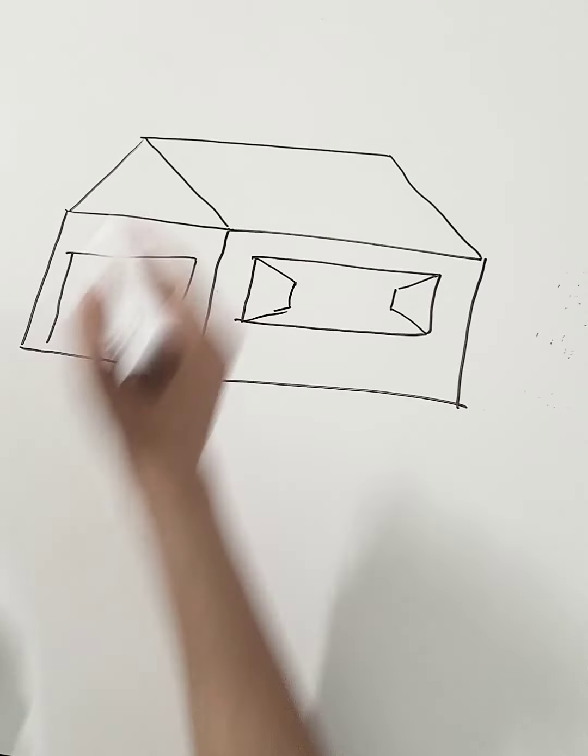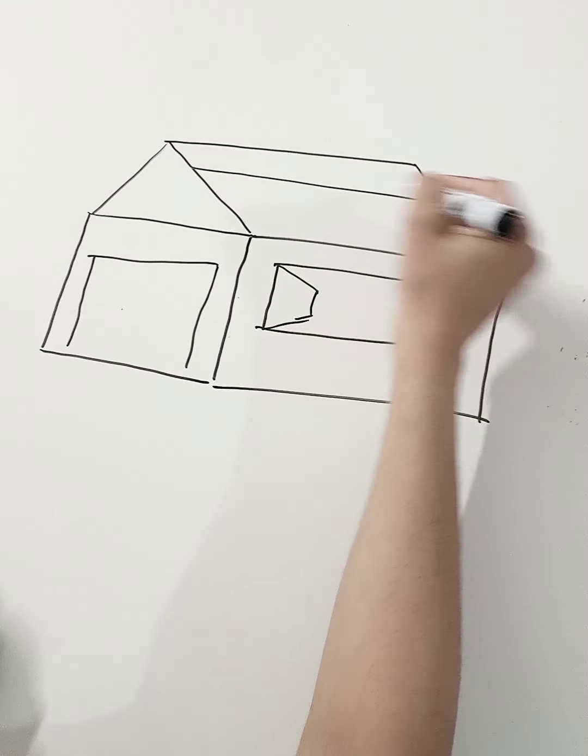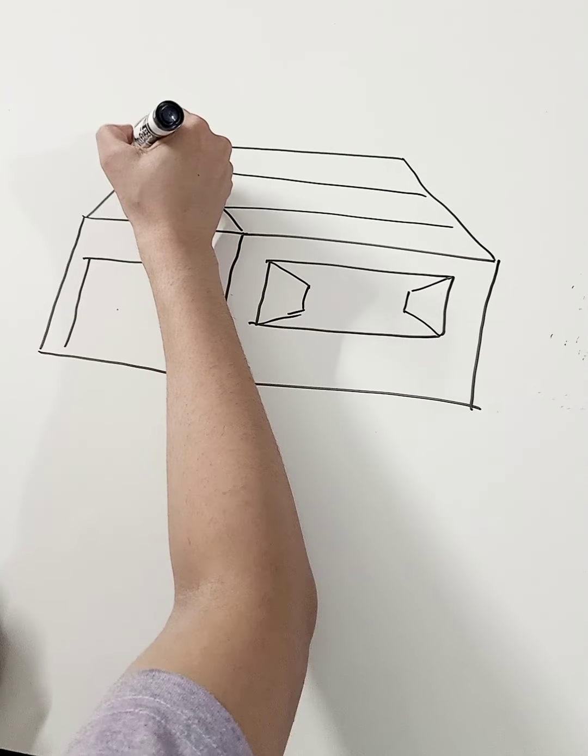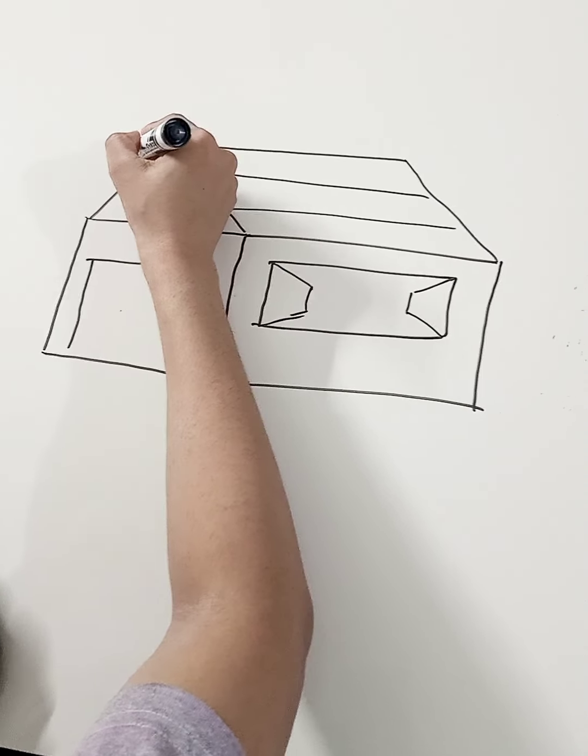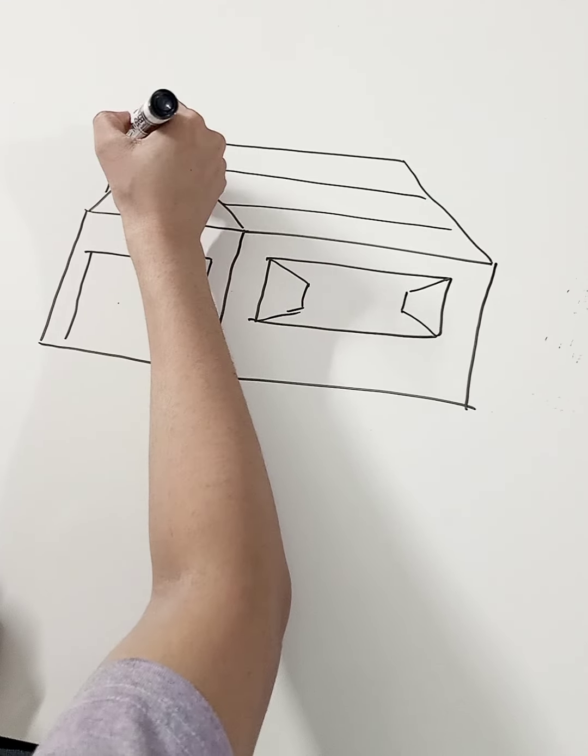And now draw the lines for the bricks of the house. Draw another rectangle for the chimney and an oval over it at the upper side.